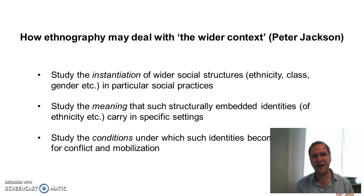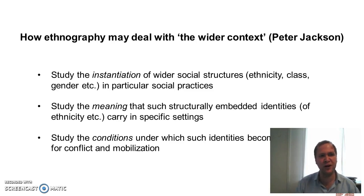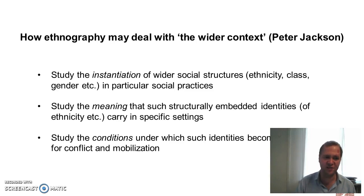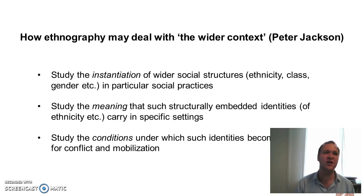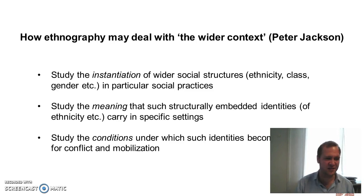What bears noting, and what Jackson arguably underplays, is the way in which ethnographers, including urban ethnographers, have themselves been very concerned with how to bring in the wider context to their situated, grounded work. The Manchester School that Jackson briefly mentions developed the notion of extended case methods, exactly as a means of trying to address the usual criticism that ethnography cannot illuminate the structural roots of persistent inequalities and how power and the political economy works, including in the city. Jackson himself gives some nice examples of how this can in fact be done — for instance, by thinking about the ethnographer's role as studying the instantiation of wider structures of ethnicity, class, gender in particular social practices, or studying the meanings that identities tied to these structures carry in specific settings, or studying the conditions under which they become focal points for conflict and mobilization.